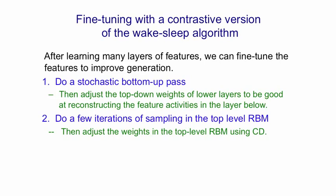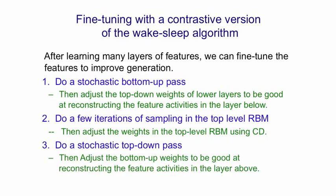Then the third stage: we take the visible units of that top-level RBM (i.e., its lower layer of units) and starting there, we do a top-down stochastic pass using the directed lower connections, which are just a sigmoid belief net. Having generated some data from that sigmoid belief net, we adjust the bottom-up weights to be good at reconstructing the feature activities in the layer above — that's just the sleep phase of the wake-sleep algorithm. The difference from the standard wake-sleep algorithm is that the top-level RBM acts as a much better prior over the top layers than just a layer of units assumed to be independent, which is what you get in a sigmoid belief net.